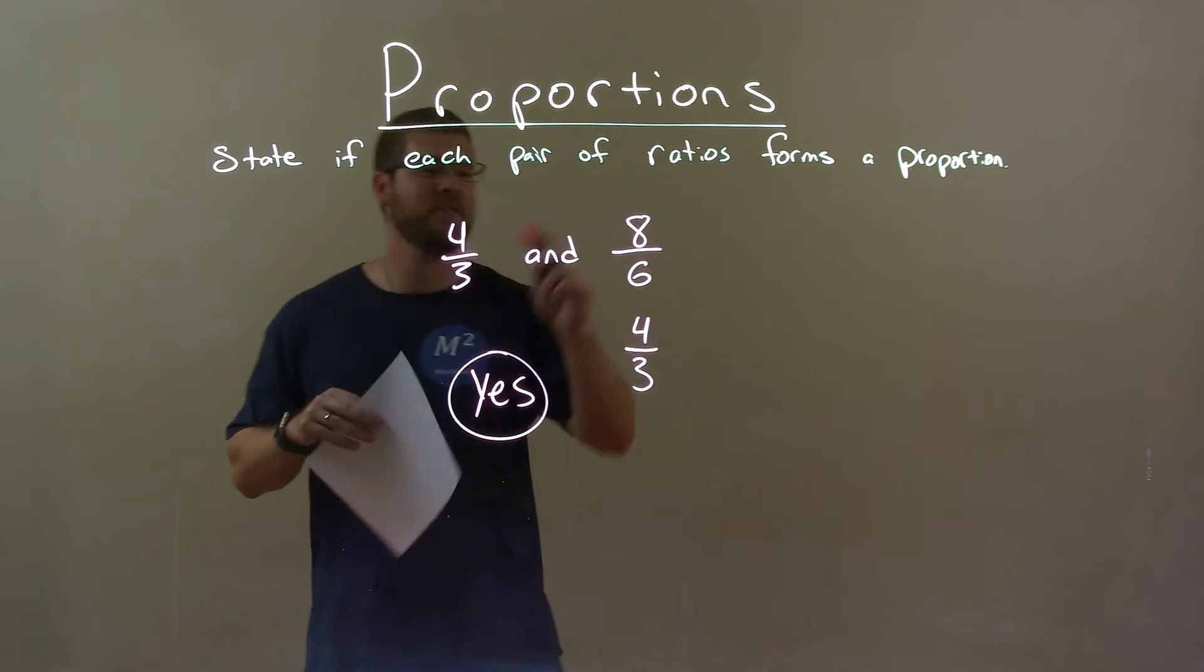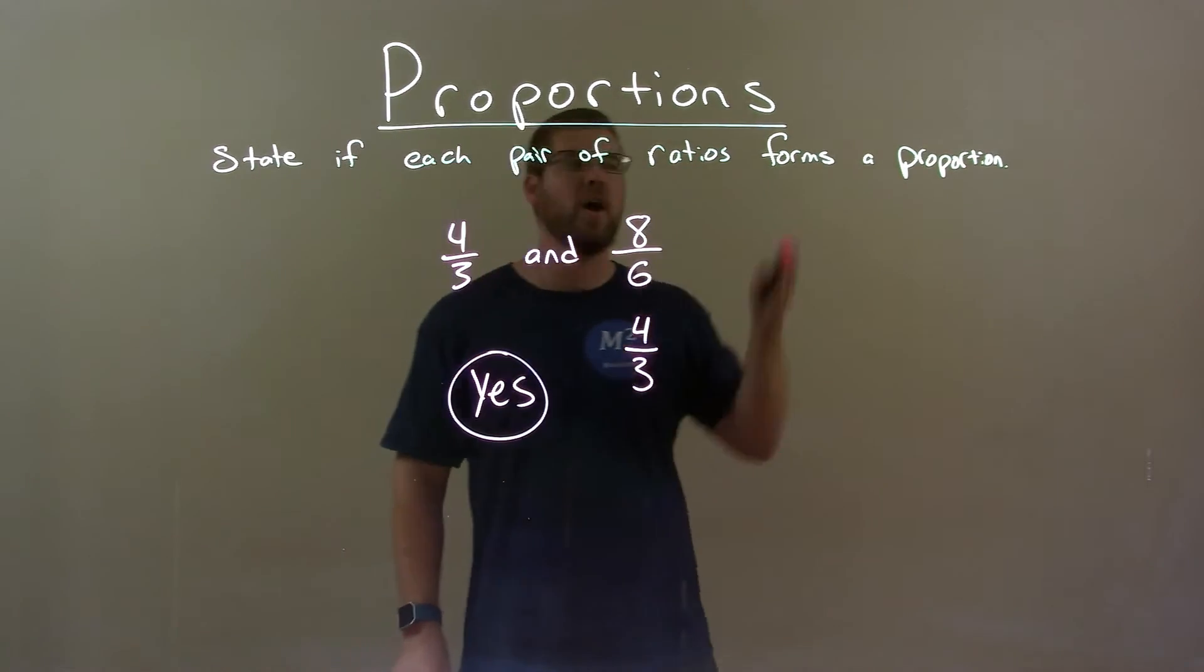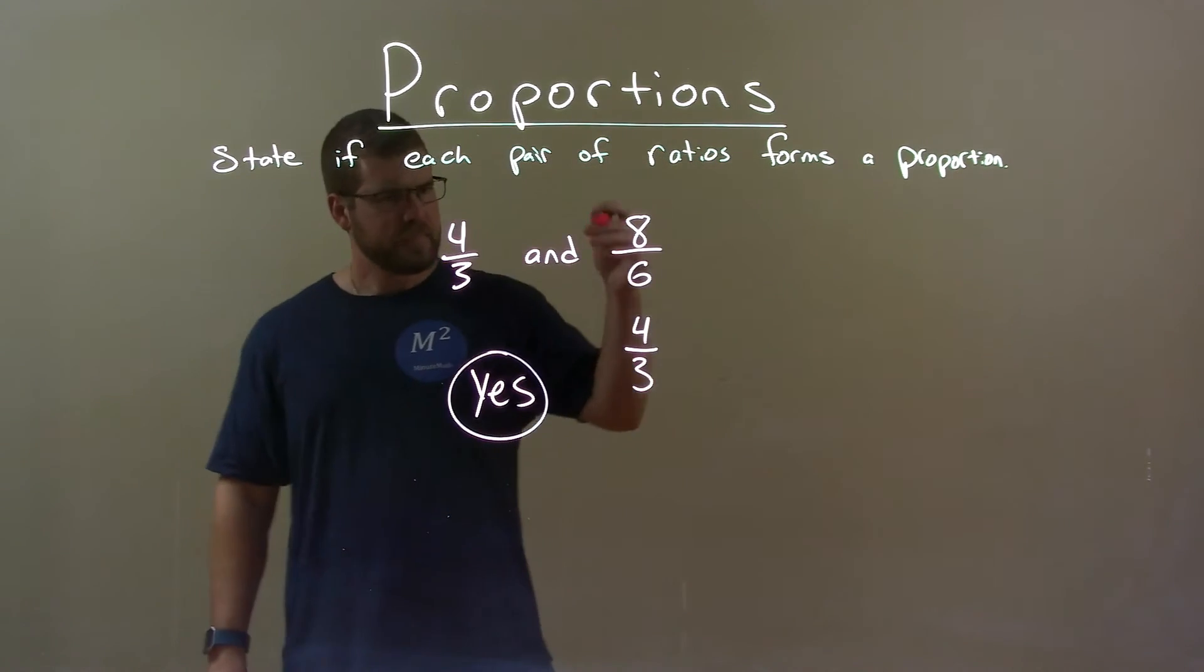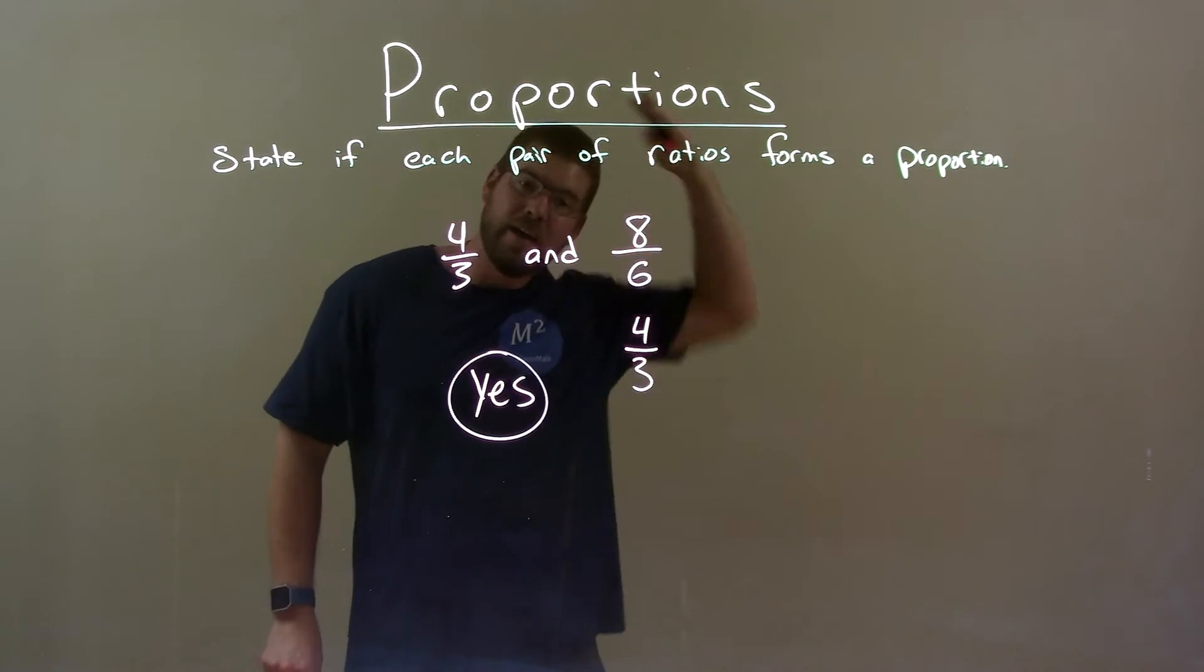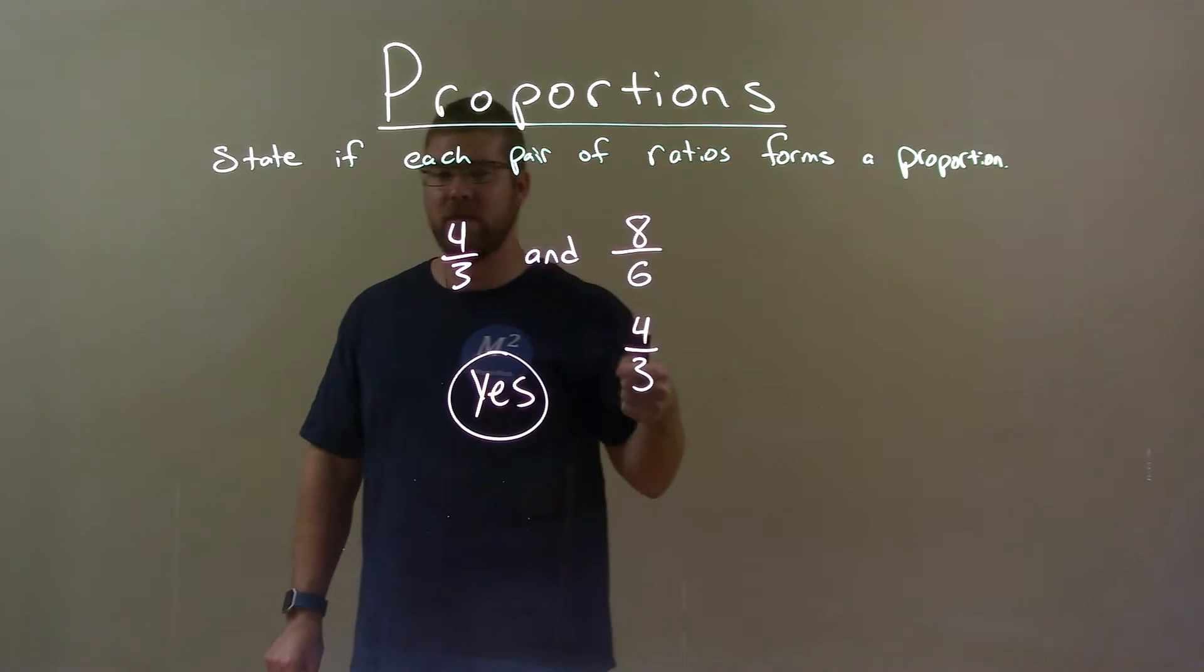So, quick recap. We're given 4 thirds and 8 over 6, and let's see if these pairs form a proportion. Well, 4 thirds does not simplify anymore, but 8 over 6 simplifies to be 4 thirds. They are the same.